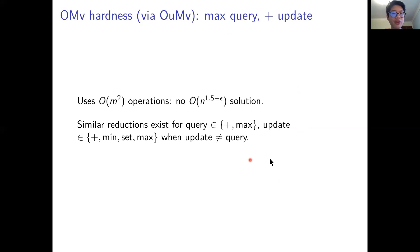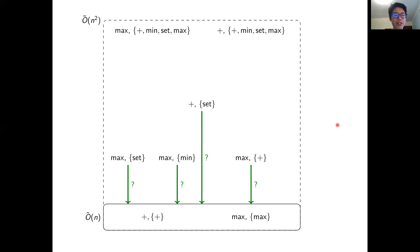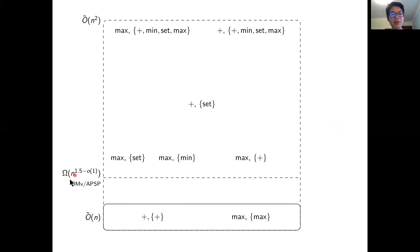This reduction uses order M-squared operations overall. Because there is no truly subcubic algorithm for OUMV under the online matrix vector conjecture, under the same conjecture there is no order n to the 1.5 minus epsilon time solution for plus-update and max-query. Using a similar reduction, we show similar hardness for nearly all other single-update instances except those with roughly linear time solutions. Under the all-pairs shortest path conjecture, we show similar hardness for that same problem.